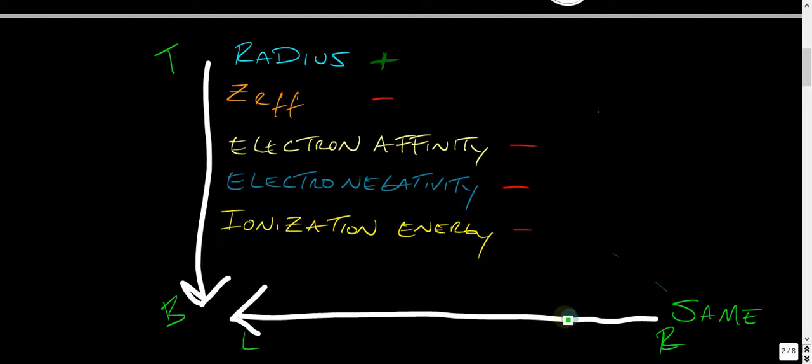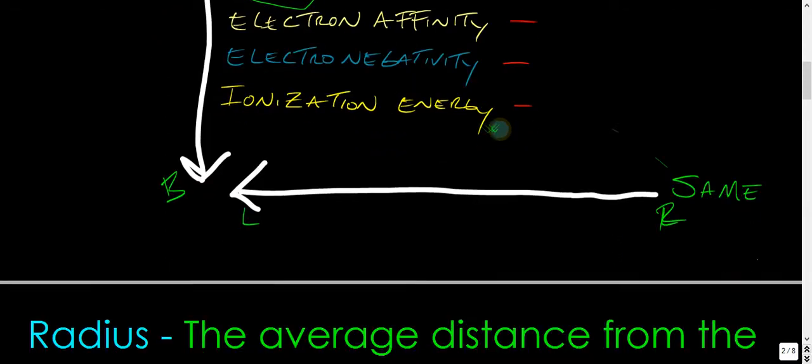And you just follow this trend. It's the same for right to left. The effective nuclear charge decreases, electron affinity decreases, electronegativity decreases, ionization energy decreases. Basically, everything can be explained because of this right here. Everything can be explained based on that.